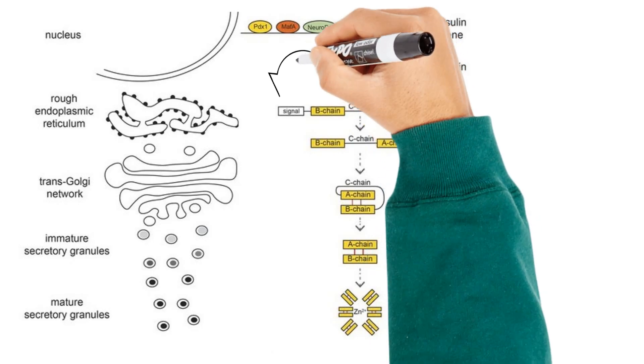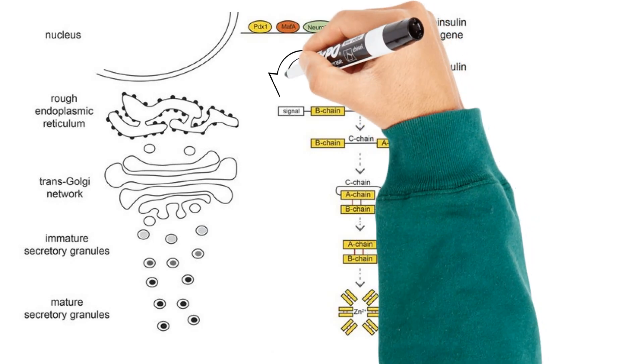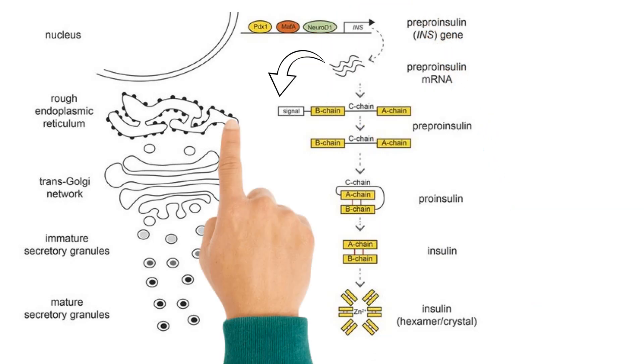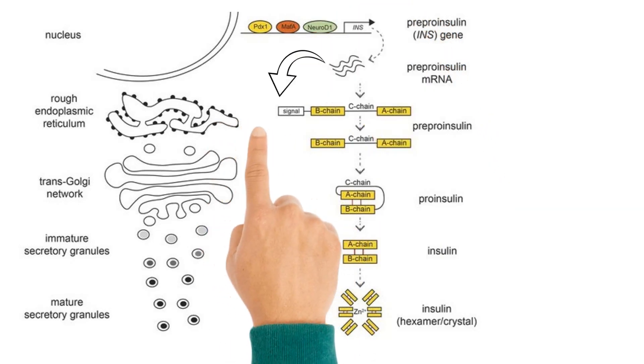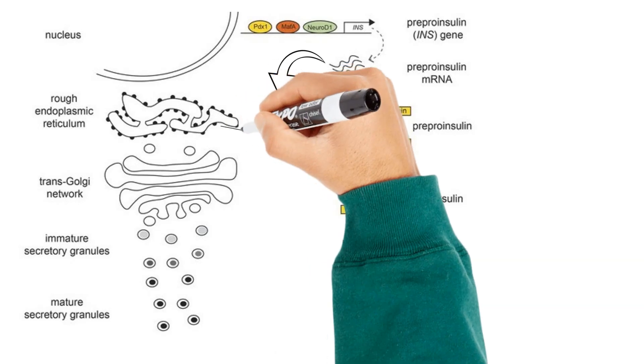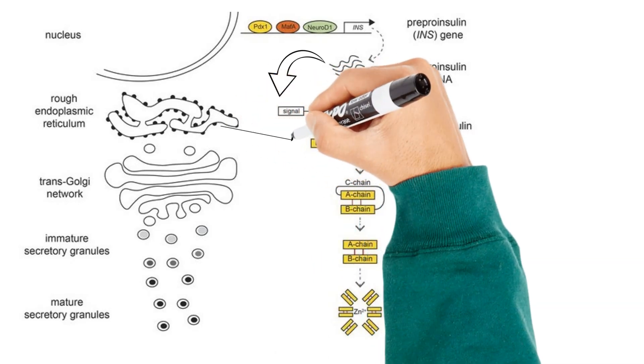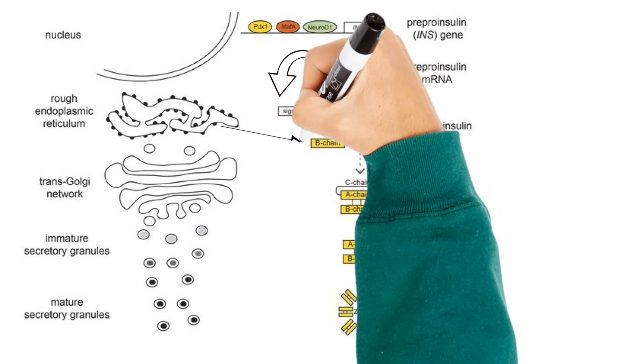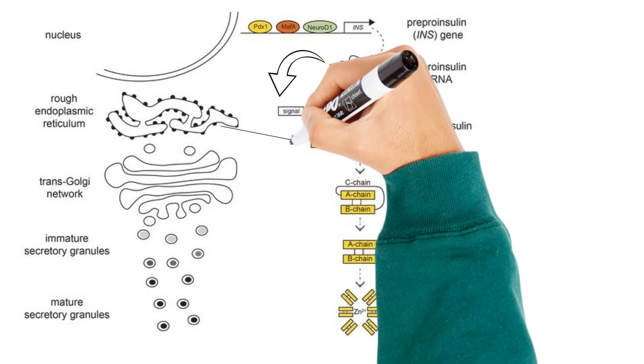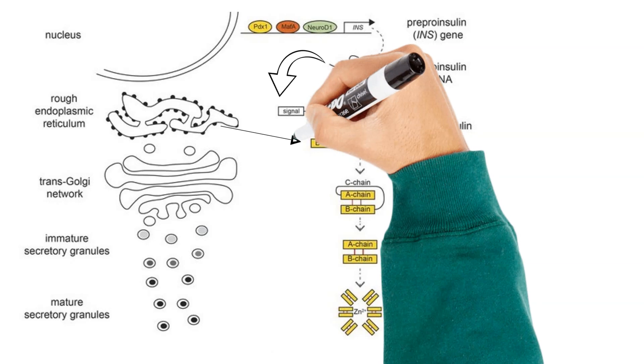As this molecule is moved across the endoplasmic reticulum, the signal peptide is cleaved by signal peptidase and the remaining chain is called pro-insulin.